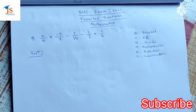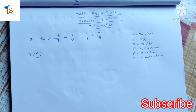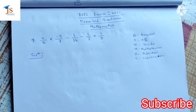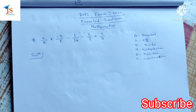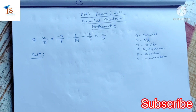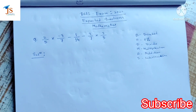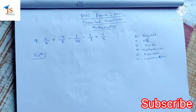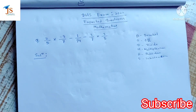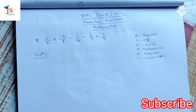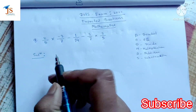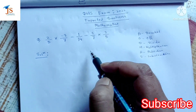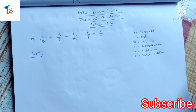If you have a question on Simplification, I will have an answer at the top of the video. If you have any questions, you can post them in the comments. We will answer the question: 2 by 5 into minus 3 by 7, minus 1 by 14, minus 3 by 7 into 3 by 5. I am going to solve this using Simplification and BODMAS.